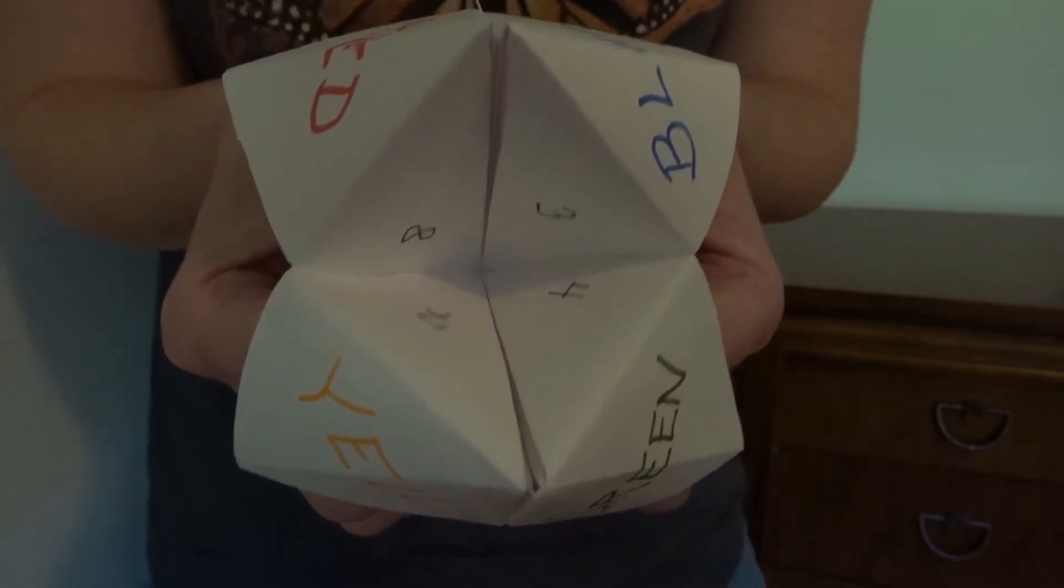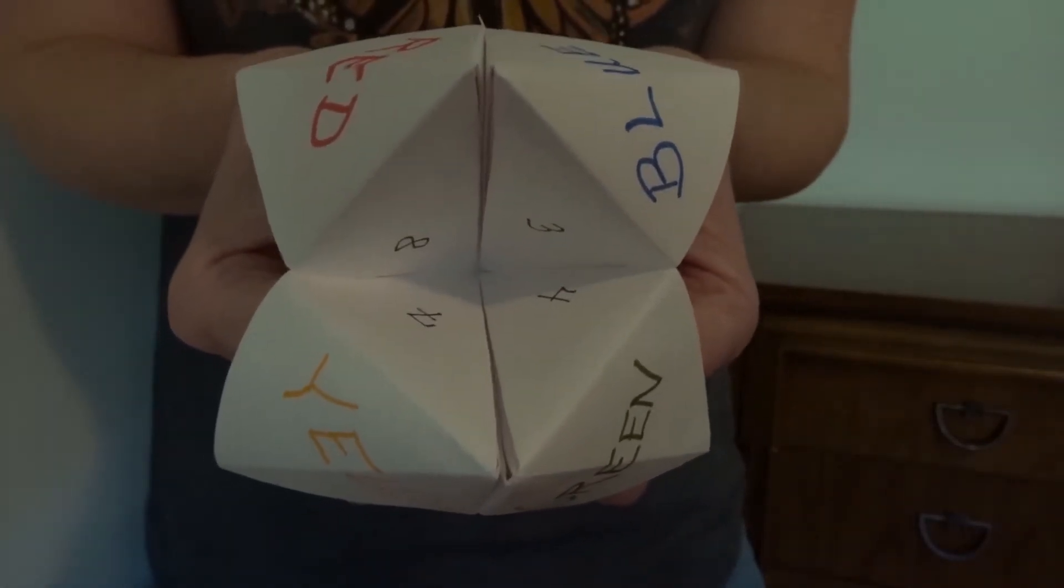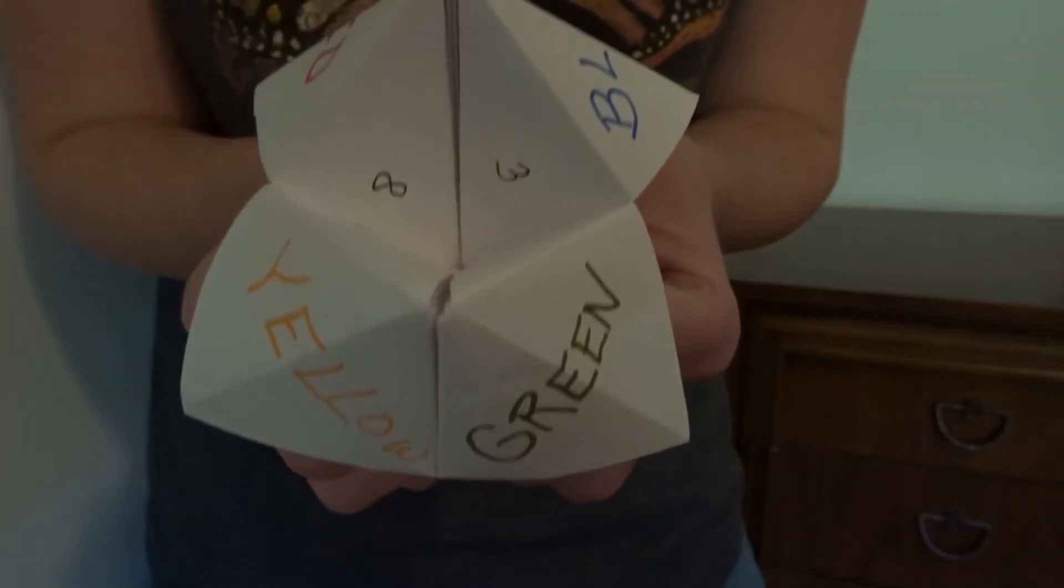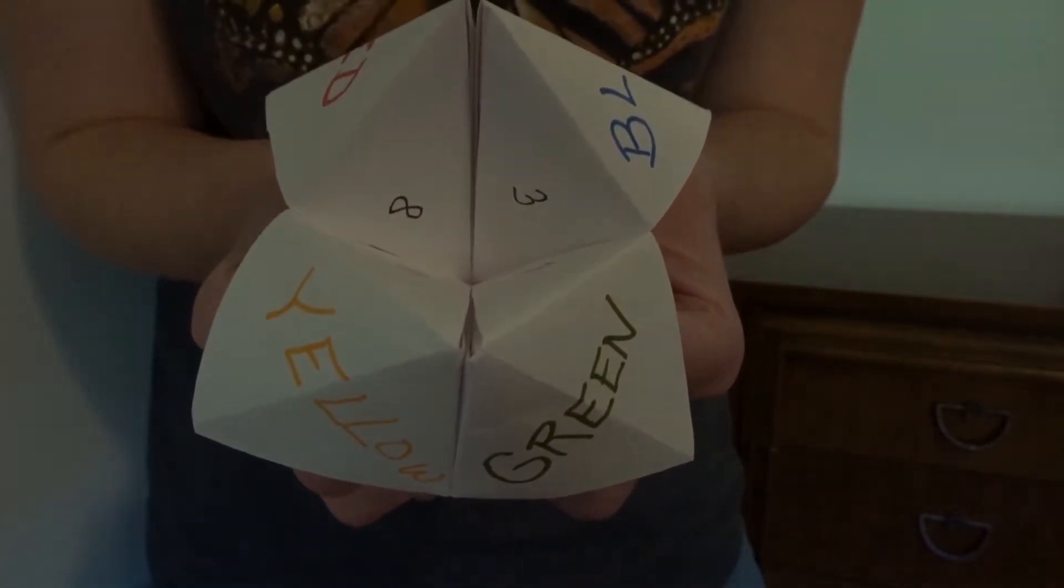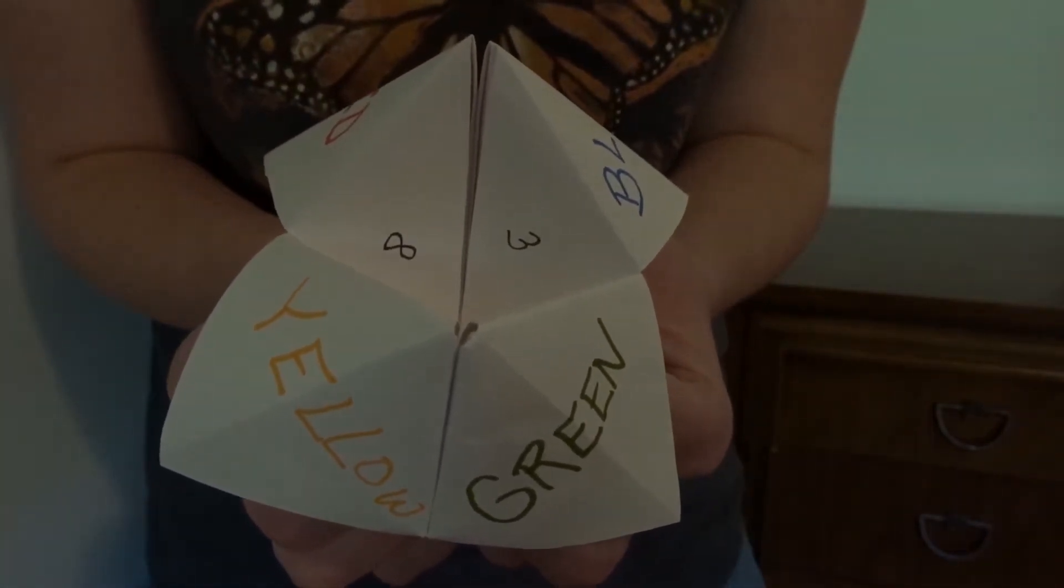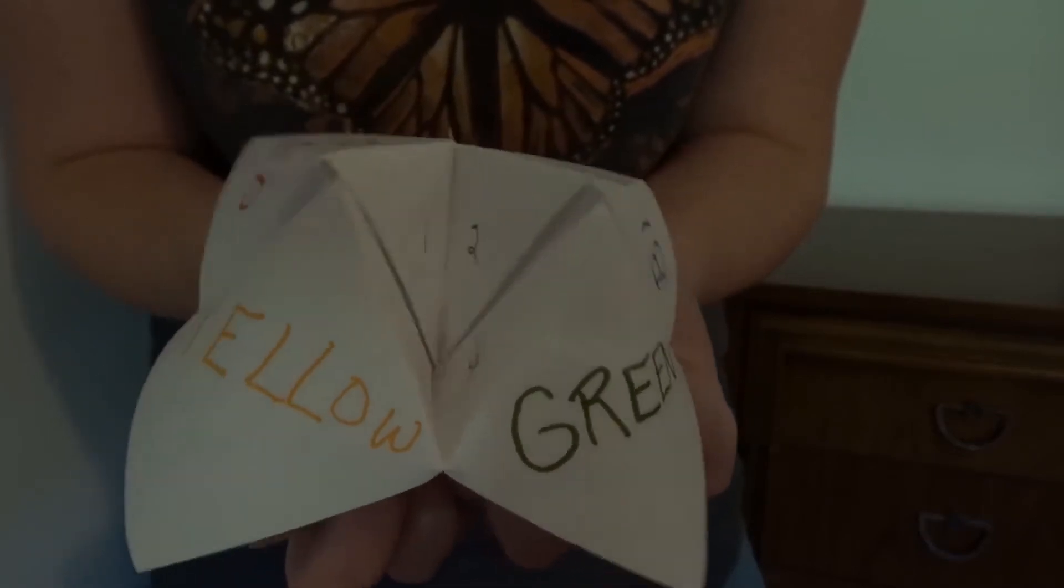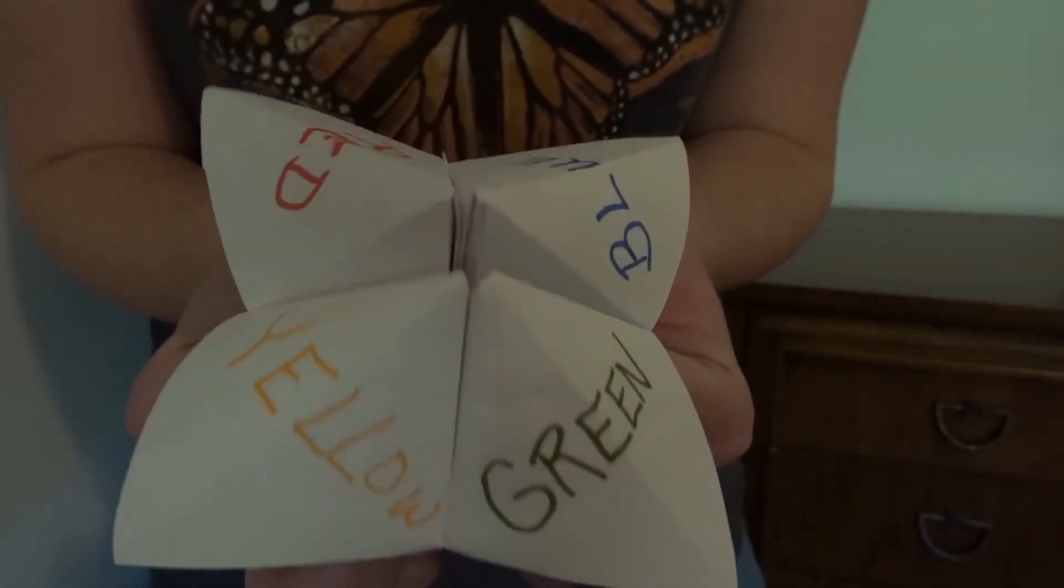That reveals the inside of the chatterbox's mouth, and you can see there are some numbers in there. So we need to pick a number. I think that 3 is looking good. Let's count with the chatterbox: 1, 2, 3.